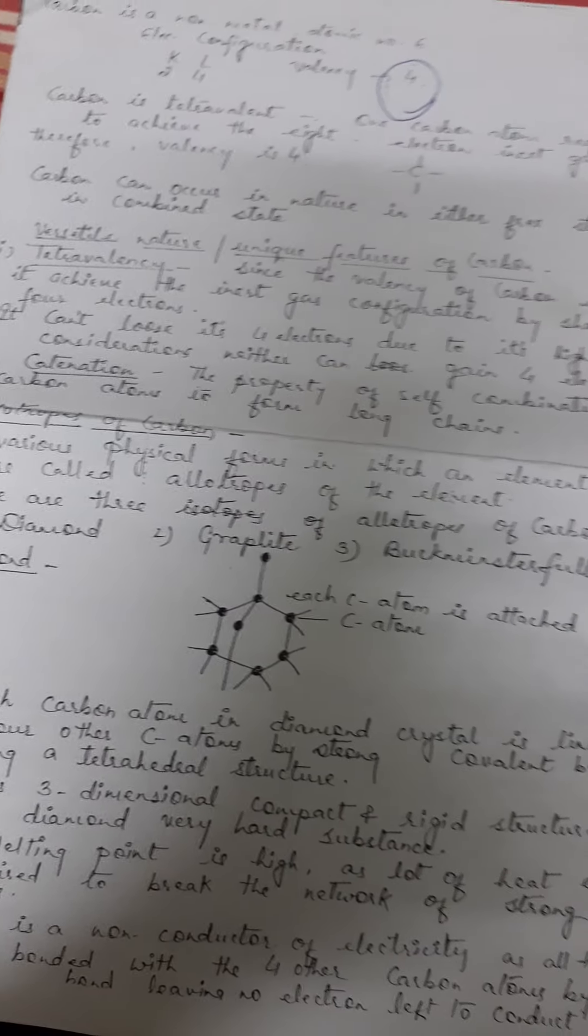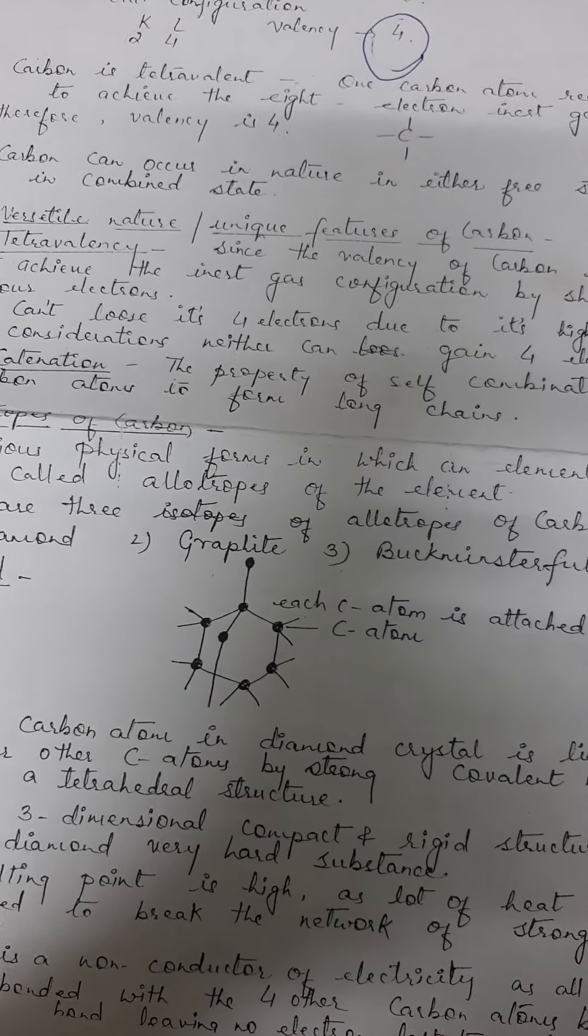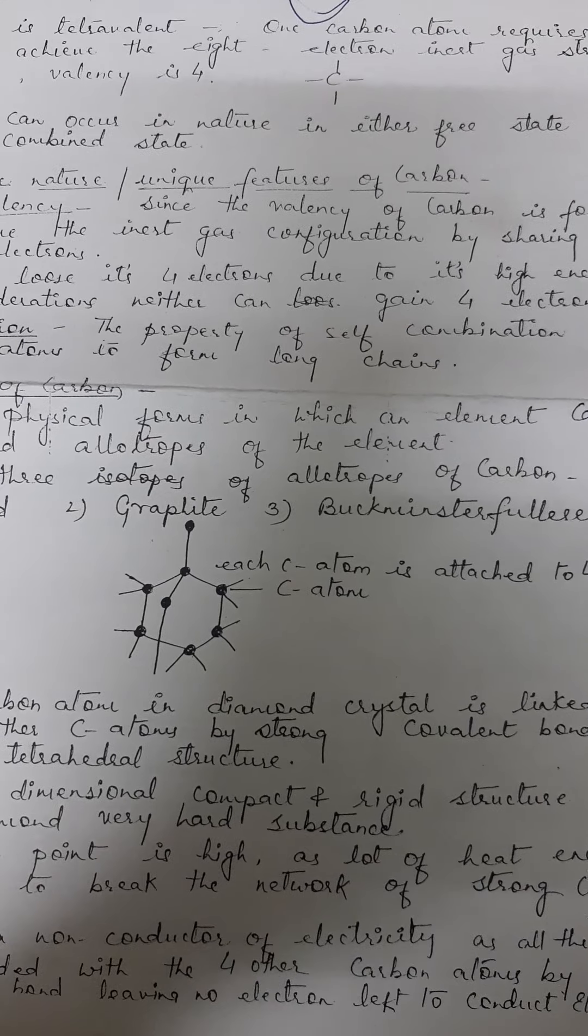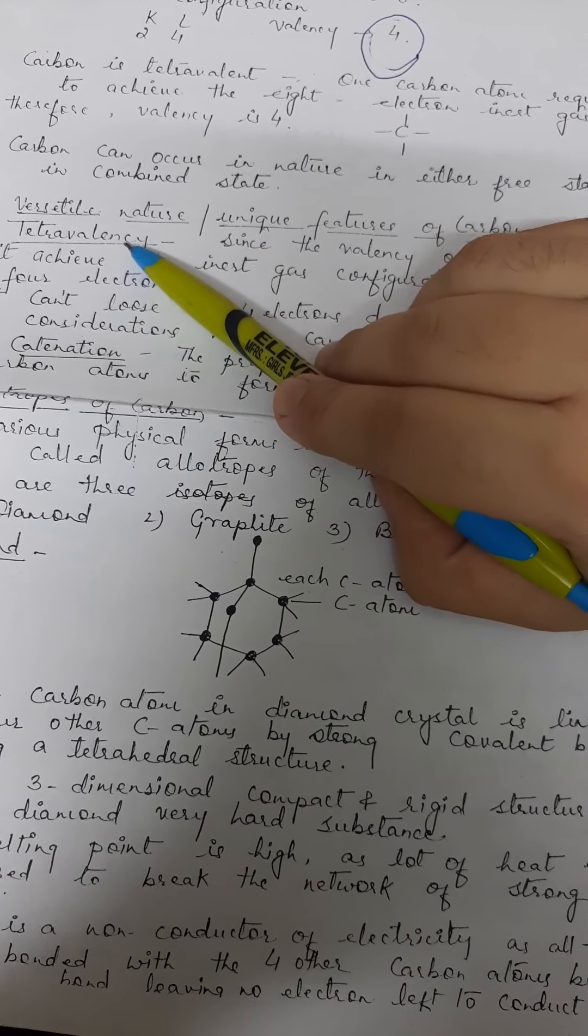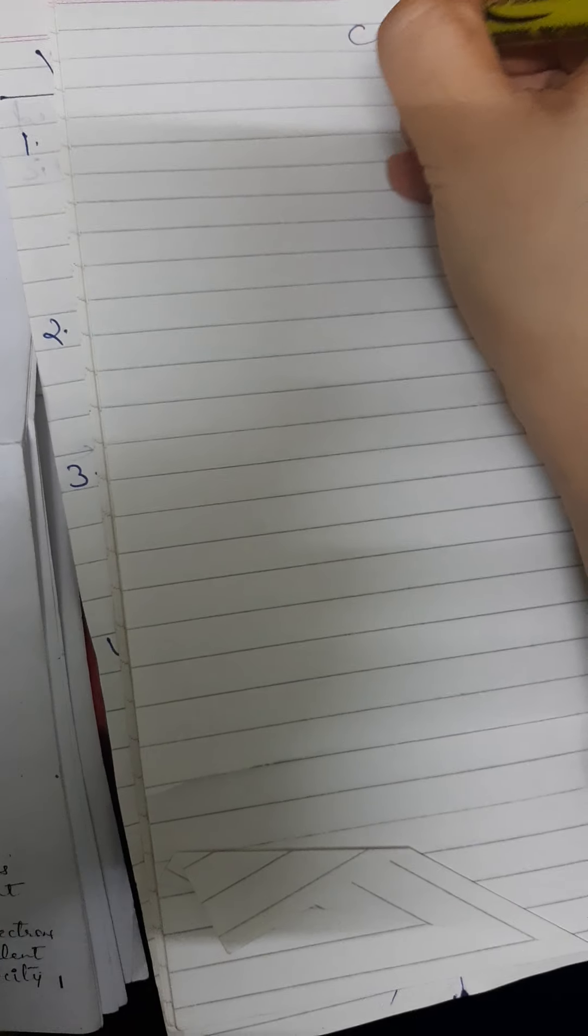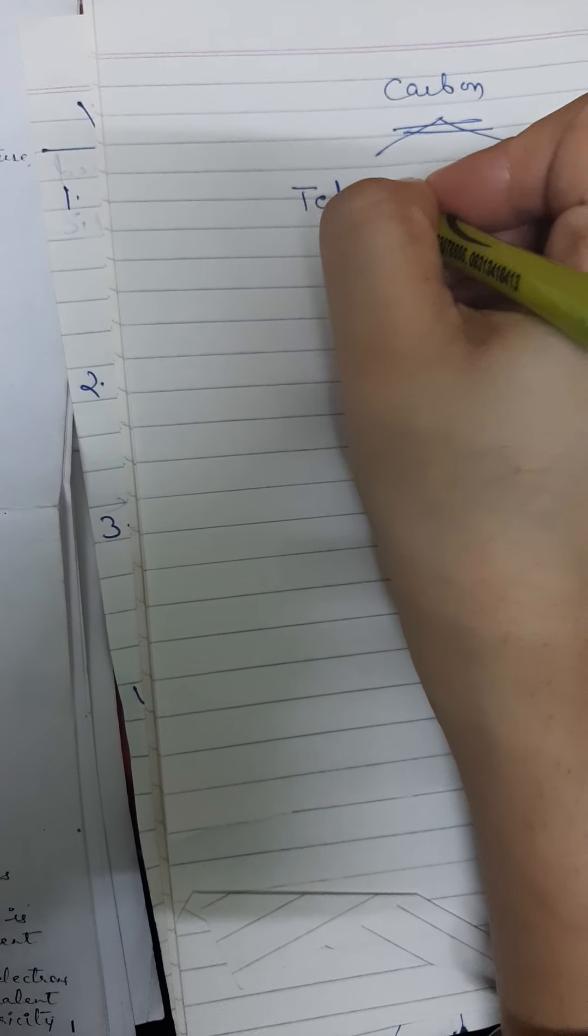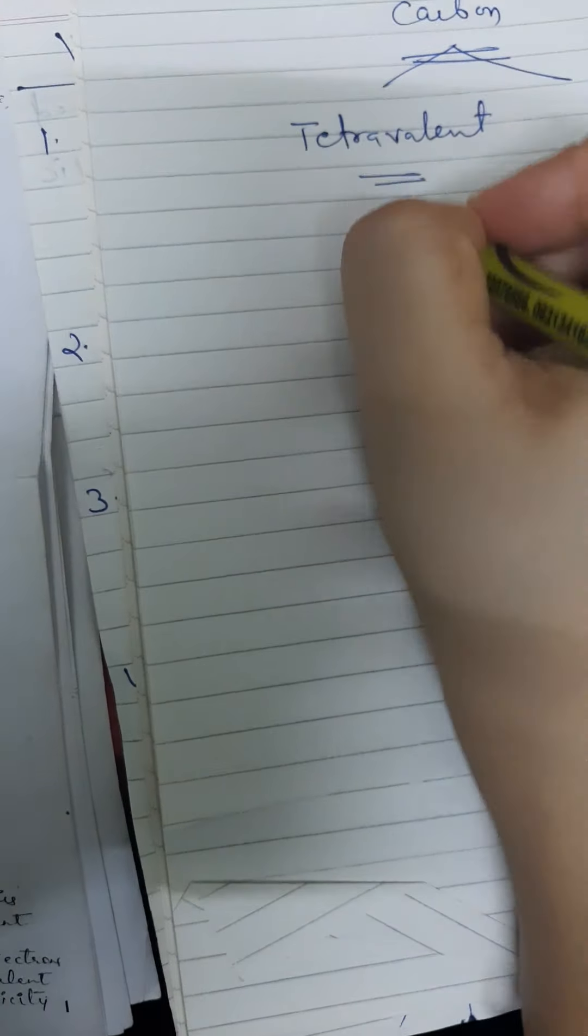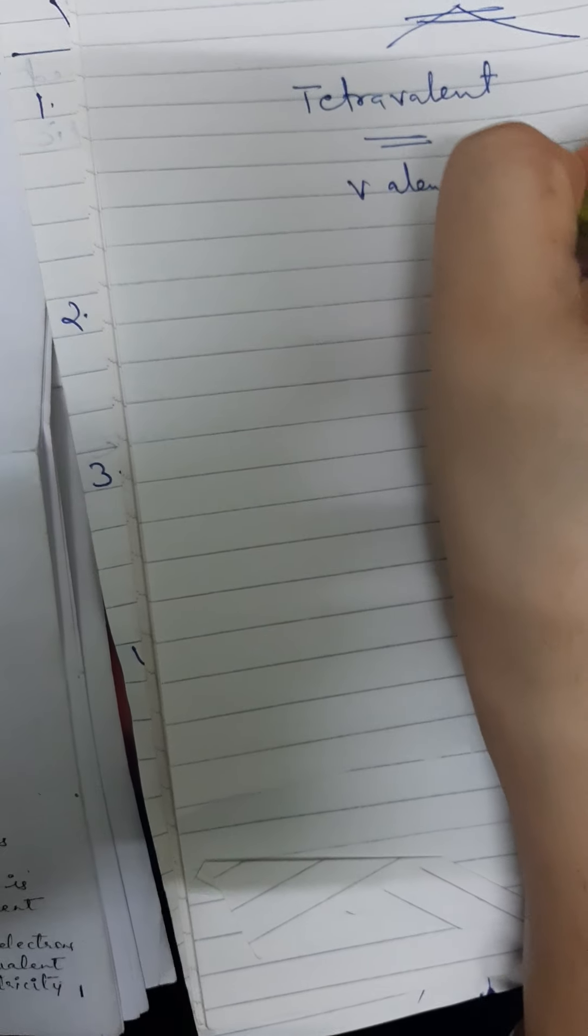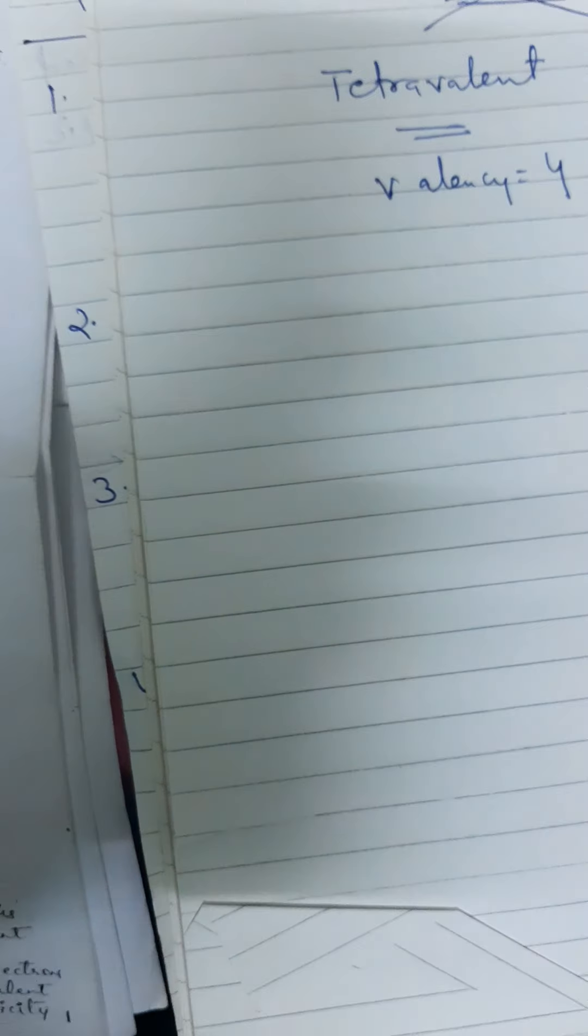If carbon has to complete its octet, it has 4 in the outermost shell, so it needs 4 electrons to complete its octet. It is tetravalent in nature. Carbon can occur in nature in either free form or combined state as well. What are the unique features of carbon? First, that it is tetravalent in nature.